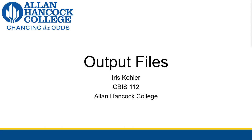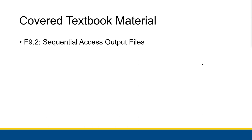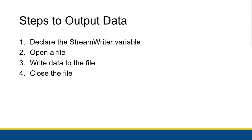Let's talk about the intricacies of getting data from memory into secondary storage using output files. We're going to cover section 9.2. There are four steps to output data from your program into secondary storage: first, declare a StreamWriter variable; then open the file you want to write data into; then write data into the file; and finally close the file. You have to do those four steps in order.